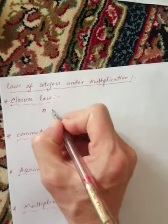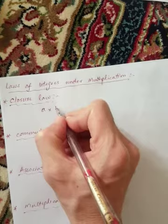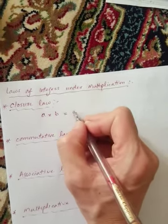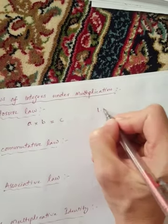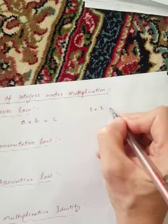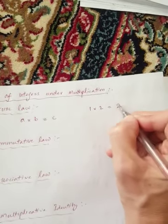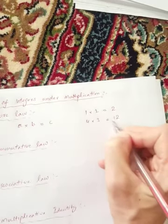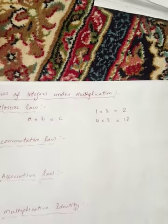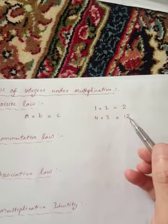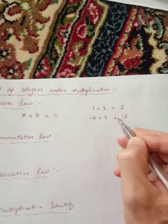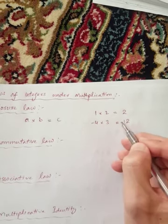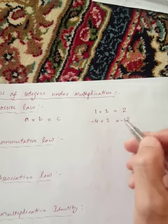Closure law: when we take two integers and multiply them, the answer we get is also an integer. For example, 1 times 2 equals 2, which is an integer. 4 times 3 equals 12, an integer. Even minus 4 times 3 equals minus 12, which is also an integer. When we multiply integers, the answer is always an integer.